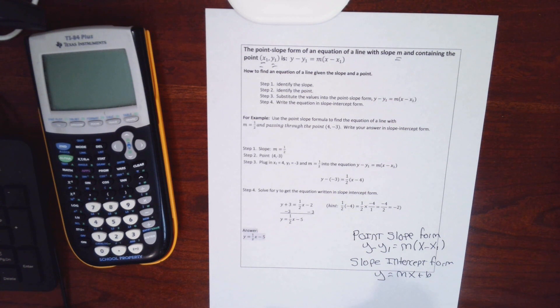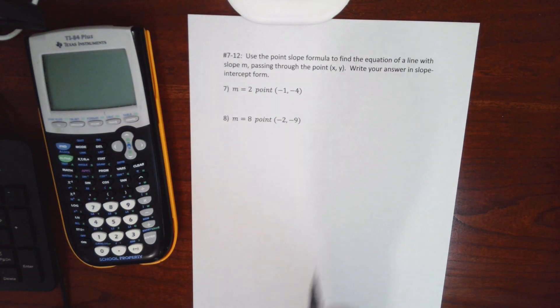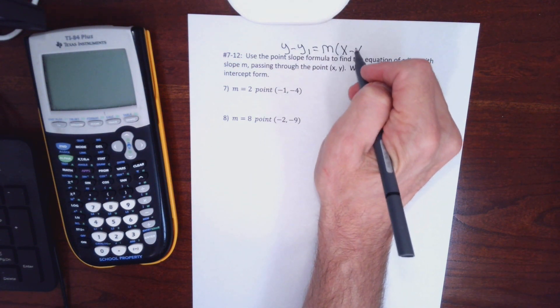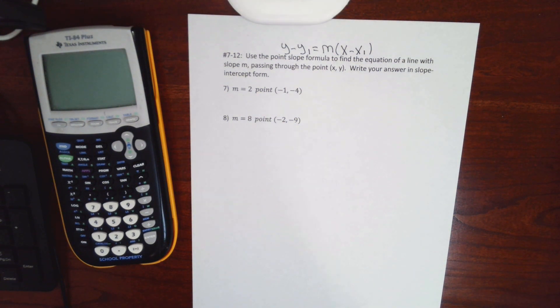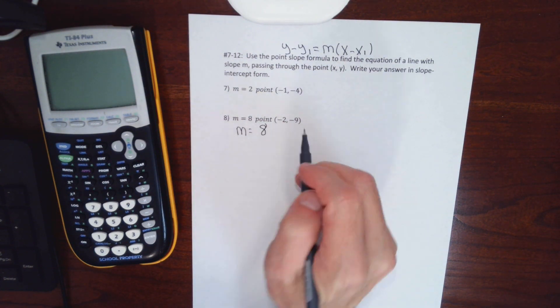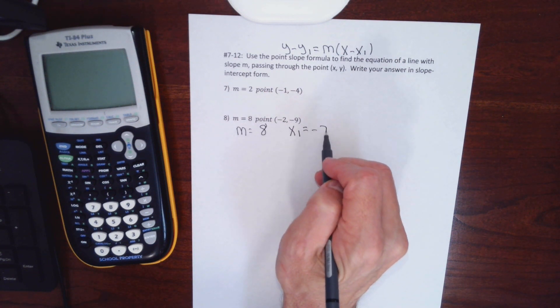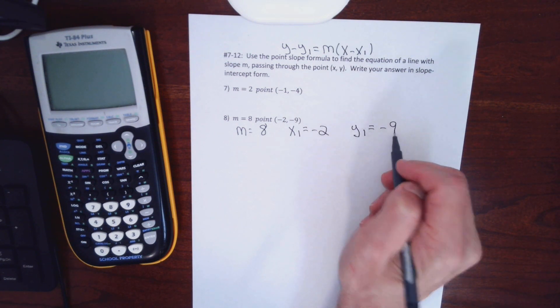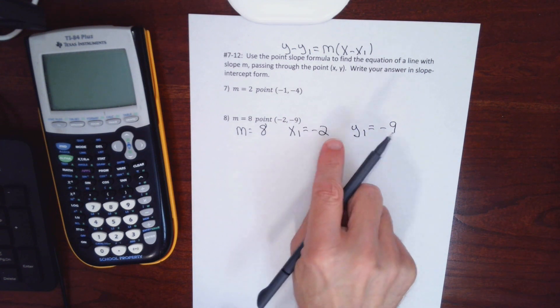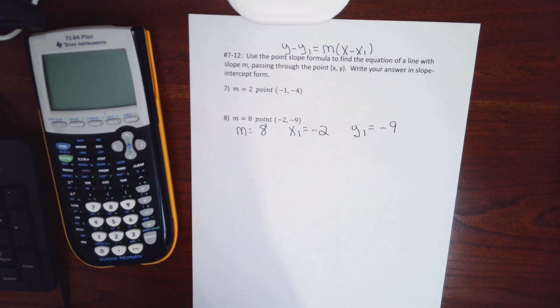Let's move right into the problems. The instructions say: use the point-slope formula — y minus the y-coordinate equals the slope times x minus the x-coordinate — then write your answer in slope-intercept form. Into the formula: m equals 8, x₁ equals negative 2, y₁ equals negative 9. This gives the same answer as using y equals mx plus b with the same values.